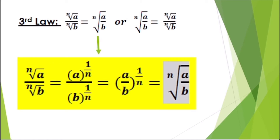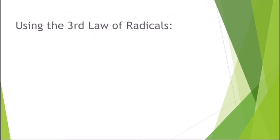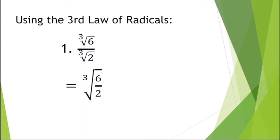Using the third law: cube root of six over cube root of two. Since they have the same index, write as cube root of six over two. Dividing six by two gives three, so the answer is cube root of three.